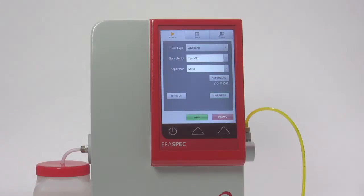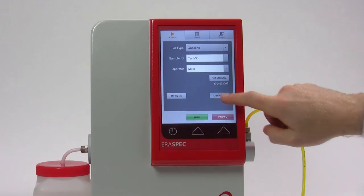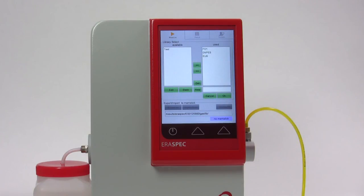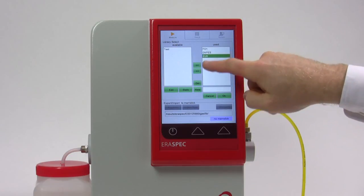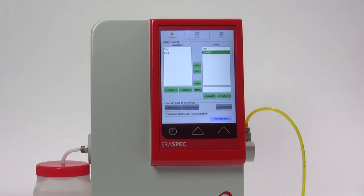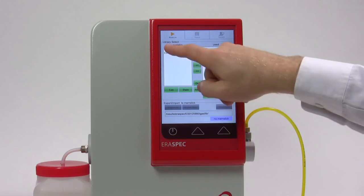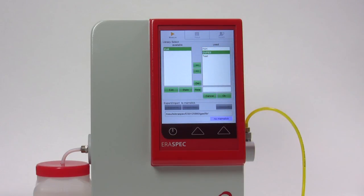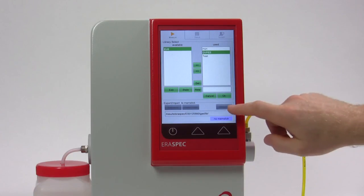The libraries can be found in the Measure menu under the Select Libraries option. The box on the right, called Used, lists the libraries used for a measurement. All other available libraries are shown in the box on the left, called Available. Use the left and right arrow keys to activate or deactivate a library by moving it to the Used or the Available box.